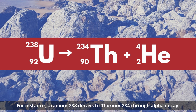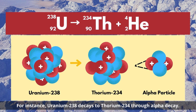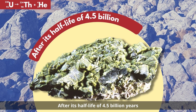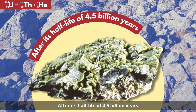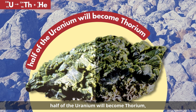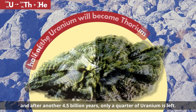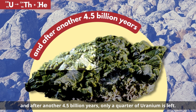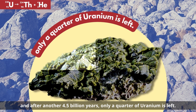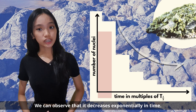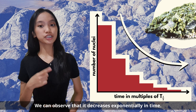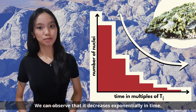For instance, uranium-238 decays to thorium-234 through alpha decay. After its half-life of 4.5 billion years, half of the uranium will become thorium. And after another 4.5 billion years, only a quarter of uranium is left. We can observe that it decreases exponentially in time.